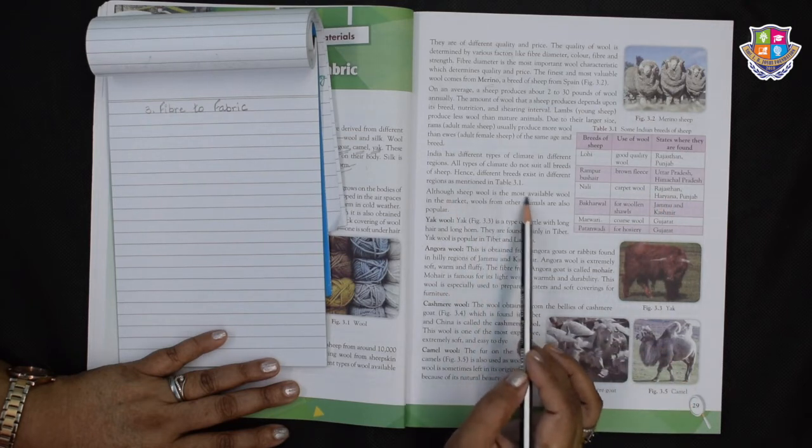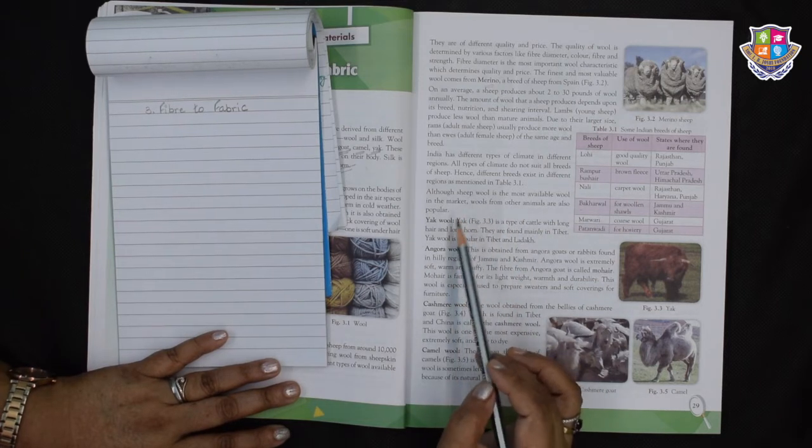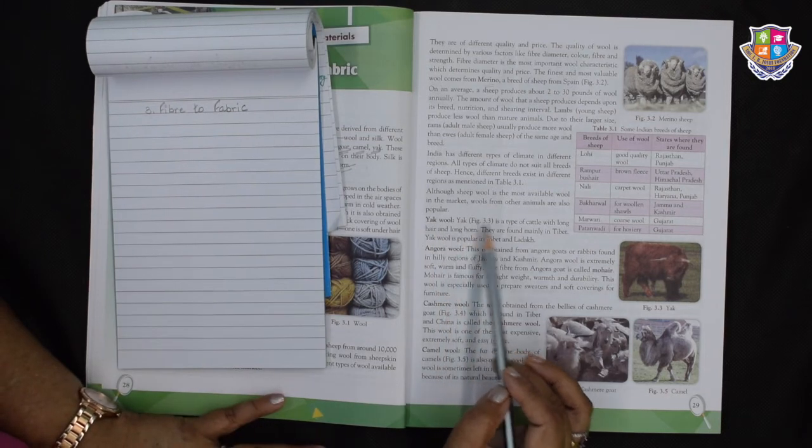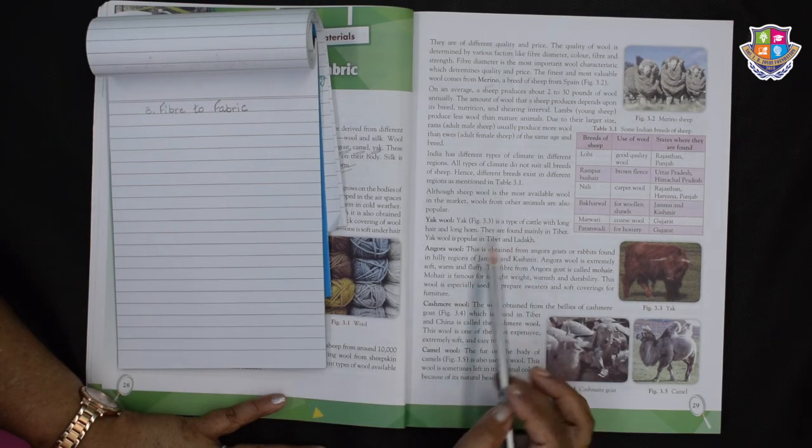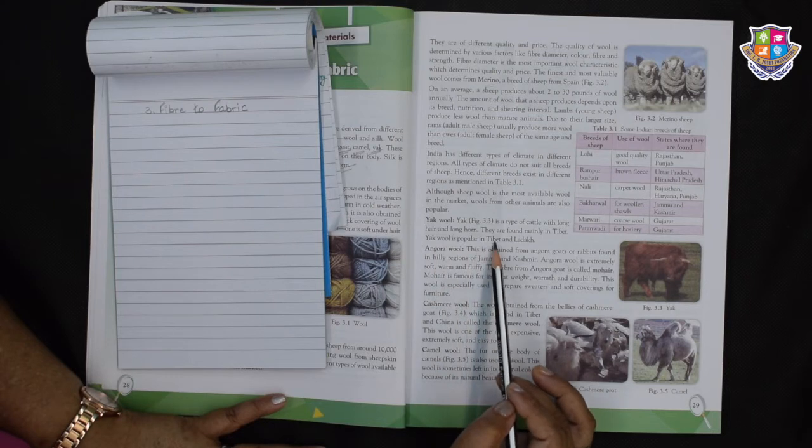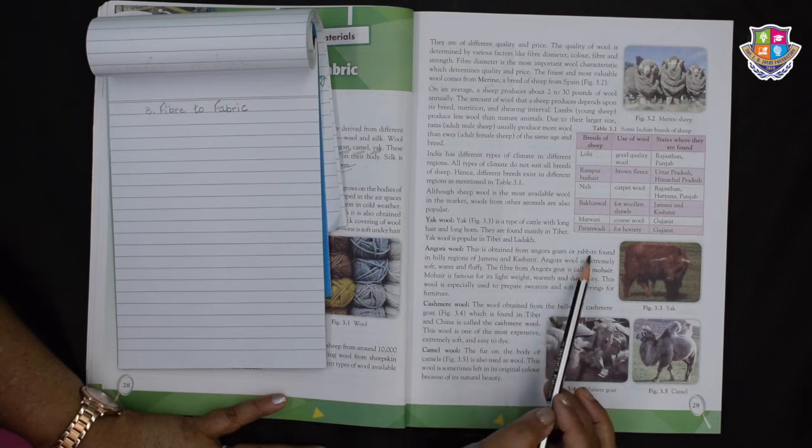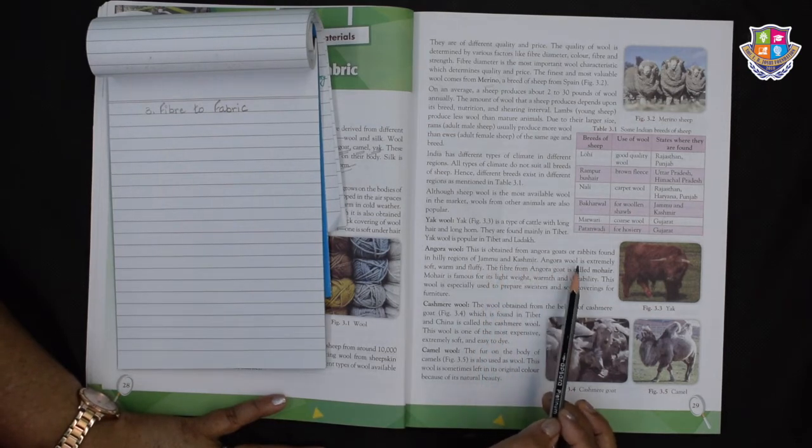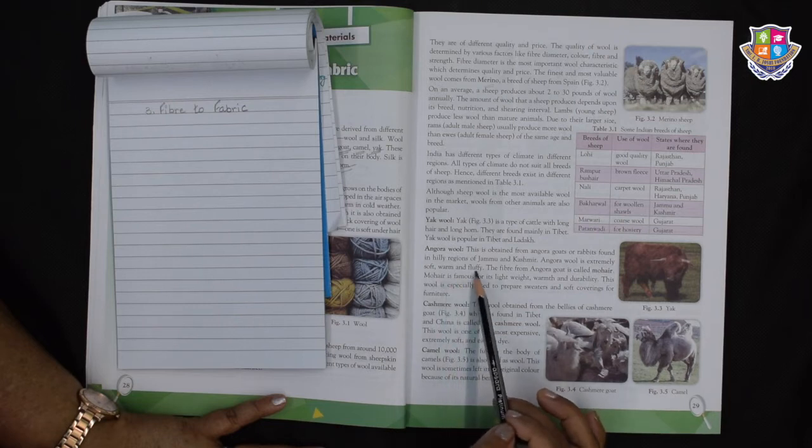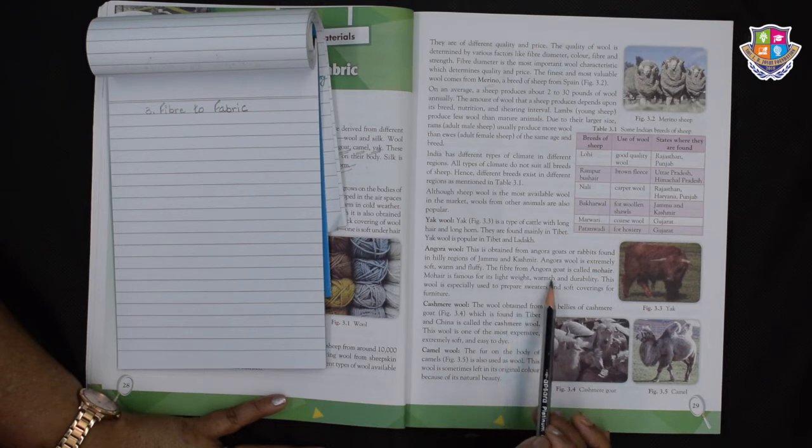These are some of the Indian breeds of sheep giving us different sorts of wool. Although sheep wool is the most available wool in the market, wools from other animals are also popular. Here we have yak wool. Yak is a type of cattle with long hair and long horn. They are found mainly in Tibet. Yak wool is popular in Tibet and Ladakh. Angora wool is obtained from angora goats or rabbits found in the hilly regions of Jammu and Kashmir. Angora wool is extremely soft, warm and fluffy.